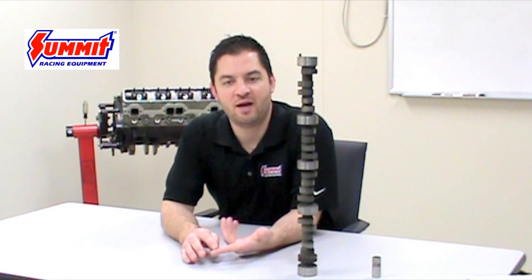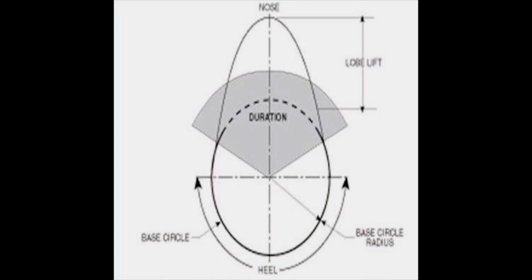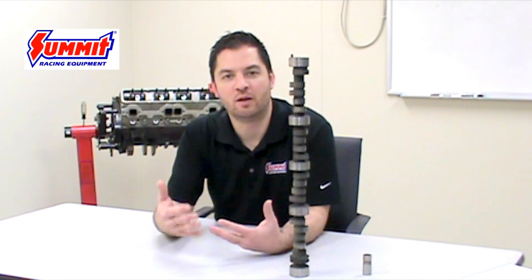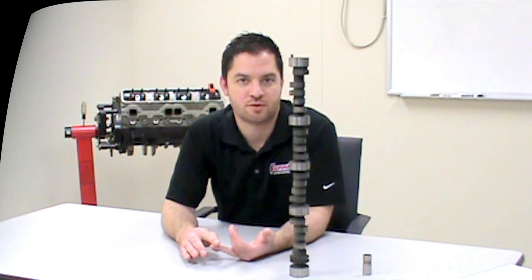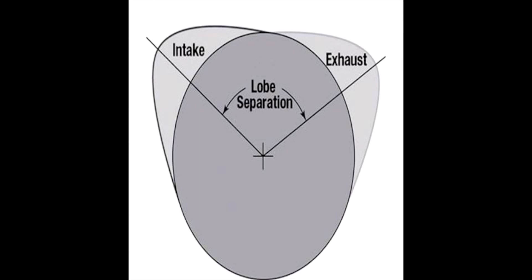Now that we've determined what lift specs and duration specs are right for our camshaft, the next number we need to look at is lobe separation. Lobe separation is often misunderstood. It is the amount of degrees between the peak lifts of both the intake and exhaust lobes on that camshaft for the same cylinder. This diagram illustrates how duration is measured. It's important to understand what lobe separation is because it can have a drastic effect on that camshaft's characteristics and how it's going to act in the engine.